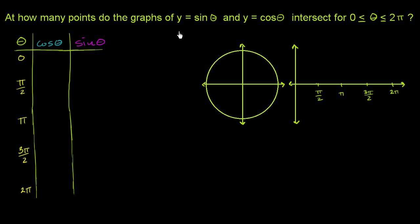We're asked: at how many points do the graphs of y equals sine of theta and y equals cosine theta intersect for theta between 0 and 2 pi? We're including 0 and 2 pi in the possible values for theta. I've set up a little chart for theta, cosine theta, and sine theta, and we can use this along with the unit circle to graph both functions and think about how many times they intersect.